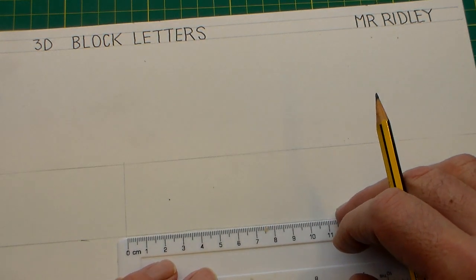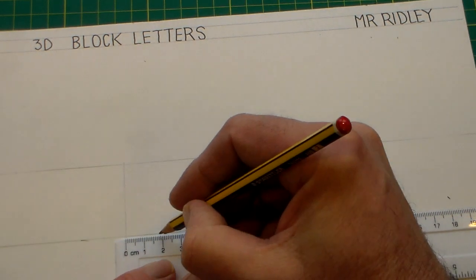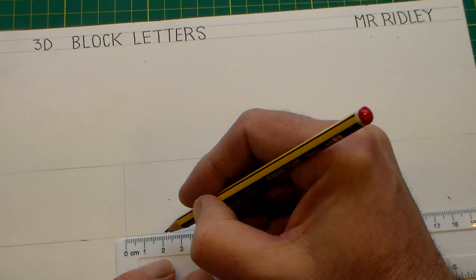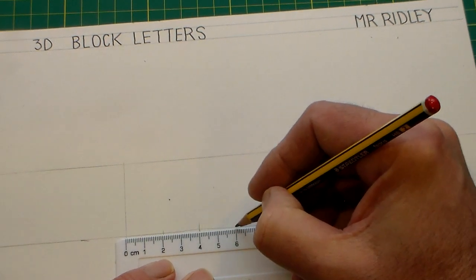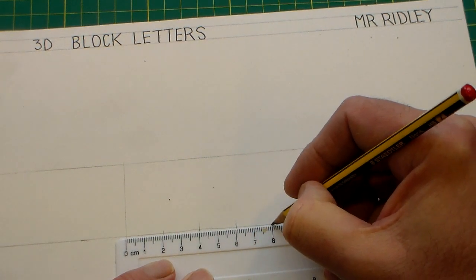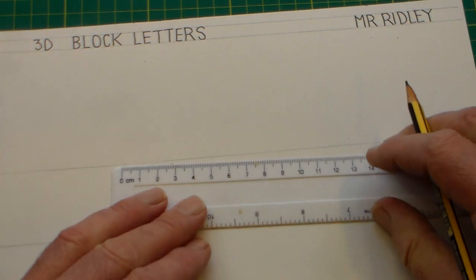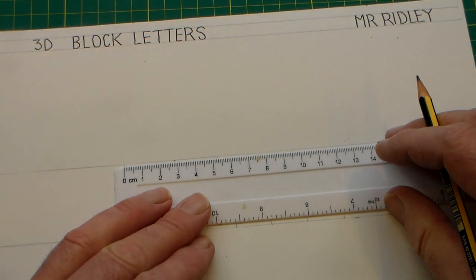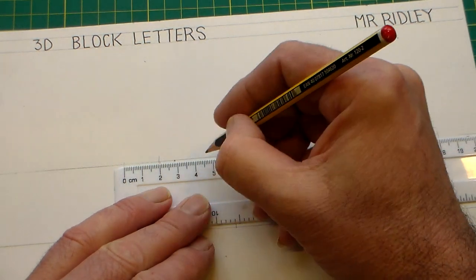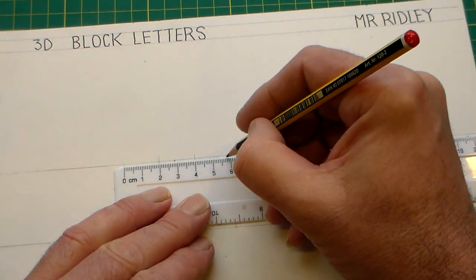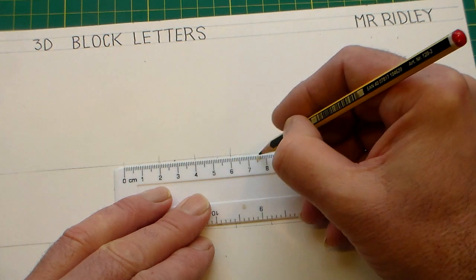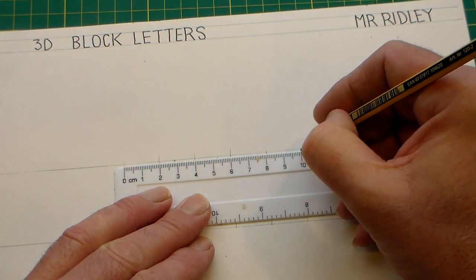Then for every letter we need to do, you could do your name, we're going to put a two centimeter or 20 millimeter spacing. So I'm just putting that spacing on here now at two, four, six, eight, ten.